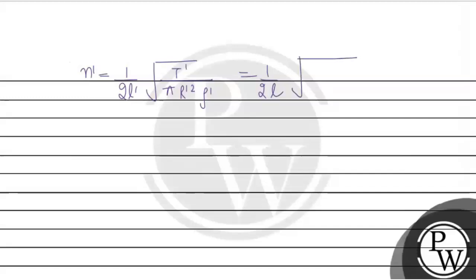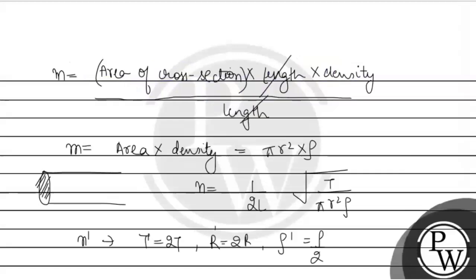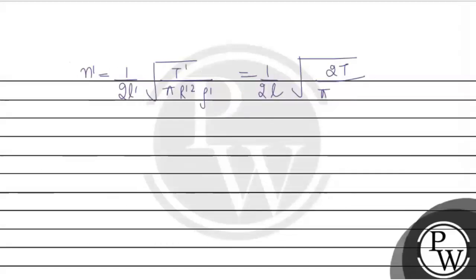Tension hamaari 2 times huya. So, 2T divided by pi as it is. Radius hamaara kitna time huya? 2 times. So, 2 ka square 4. R square multiply by. Density hamaari half huya. So, rho by 2. 2 hamaara upa jala jayega.